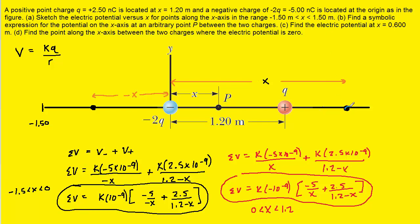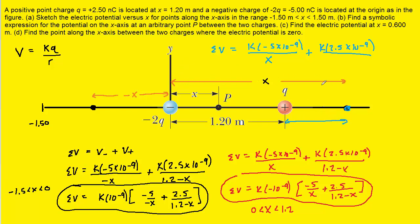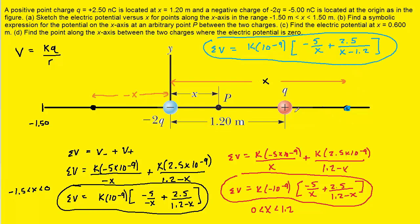For an arbitrary point beyond 1.2, the total potential is k times the negative charge divided by distance x, plus k times the positive charge divided by the distance from the positive charge to that point — which is x minus 1.2, not x. We simplify similarly, and this equation is valid from x equals 1.2 up to 1.5, the maximum distance we need to graph. We note that domain accordingly.